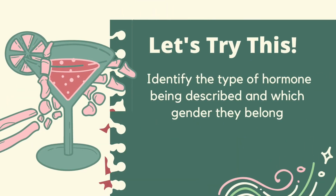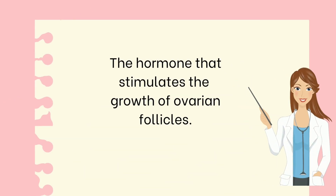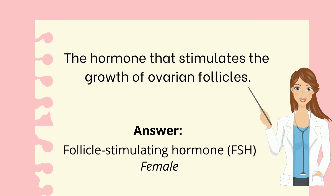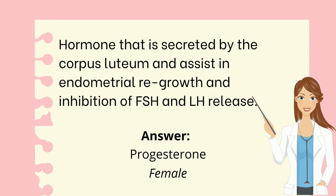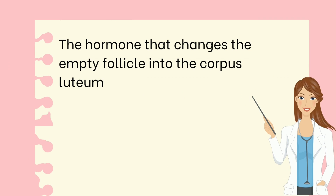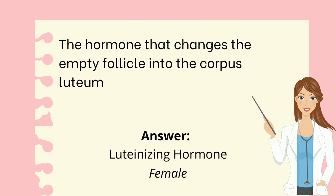Now, let's try to answer this. Identify the type of hormone being described and which gender they belong to. The hormone that stimulates the growth of ovarian follicles — the correct answer is follicle-stimulating hormone, which is found in females. Next, the hormone secreted by the corpus luteum that assists in endometrial growth and inhibition of FSH and LH release — the correct answer is progesterone, which is found in females. The hormone that changes the empty follicle into the corpus luteum — the correct answer is luteinizing hormone, which is found in females.